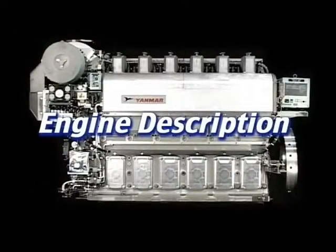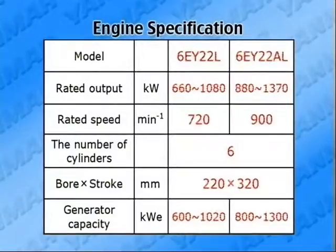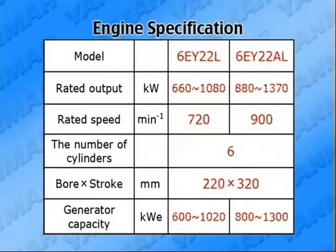I'll explain here the outline for the engine information. First of all, I'll explain the main points. There are two types in the rated speed: 720 RPM and 900 RPM. We call them accordingly 6EY22L and 6EY22AL. Both of them have six cylinders and a bore stroke of 220 x 320 mm.